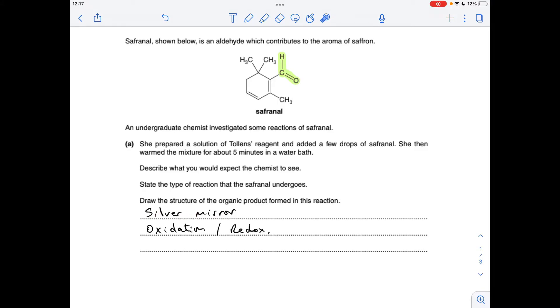The silver ions in the silver nitrate solution in the Tollens' reagent get reduced to silver atoms. It's an oxidation reaction because the aldehyde group is oxidised to a carboxylic acid group. You could also say redox because we've got both processes taking place.